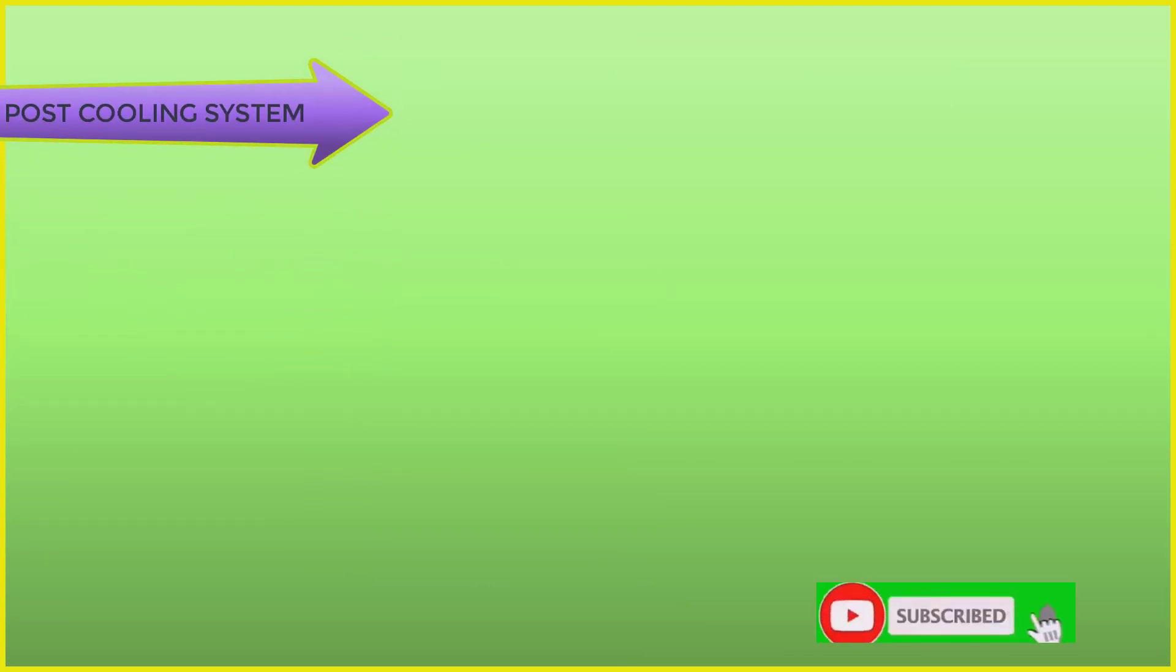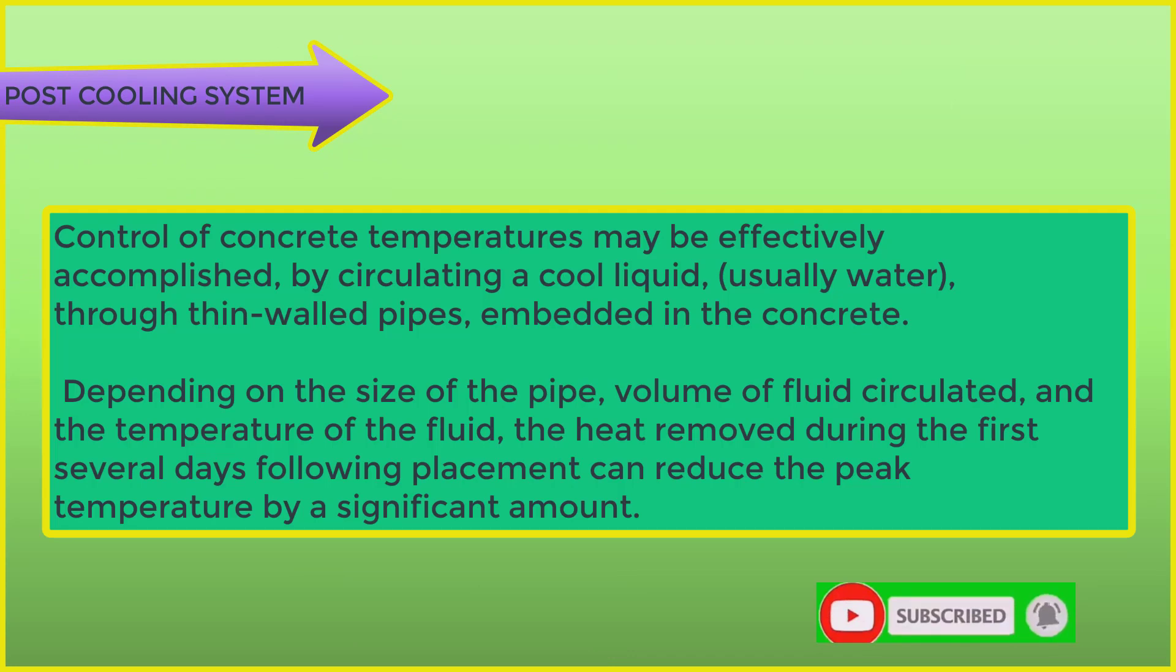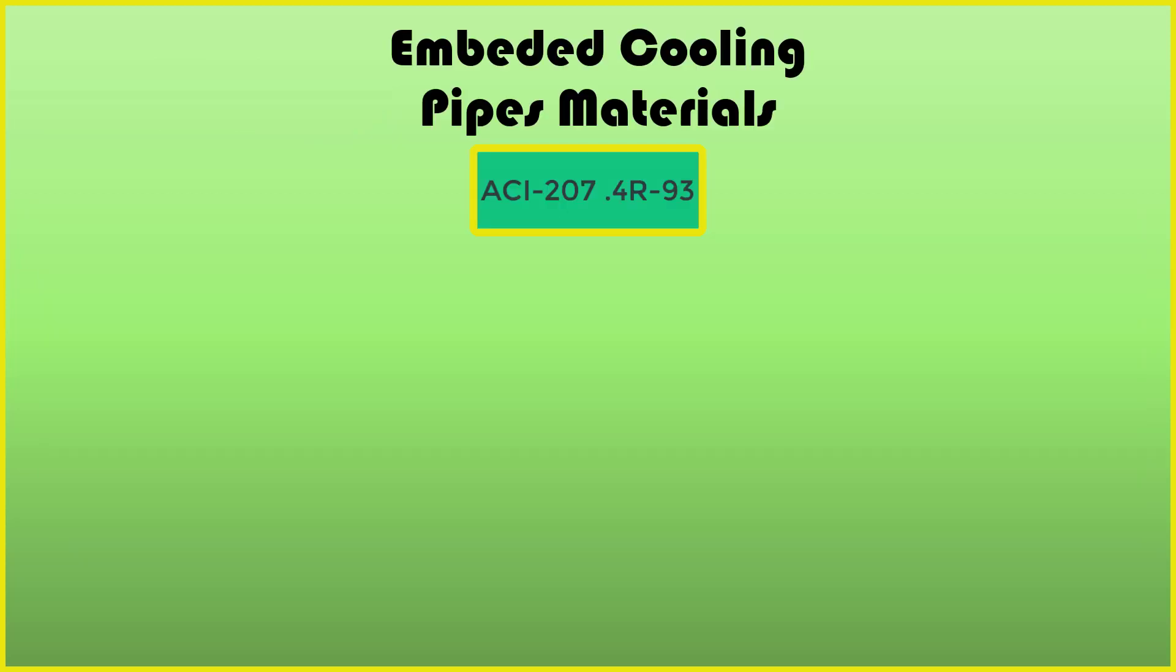Post-cooling system. Control of concrete temperatures may be effectively accomplished by circulating a cool liquid, usually water, through thin-walled pipes embedded in the concrete. Depending on the size of the pipe, volume of fluid circulated, and the temperature of the fluid, the heat removed during the first several days following placement can reduce the peak temperature by a significant amount.